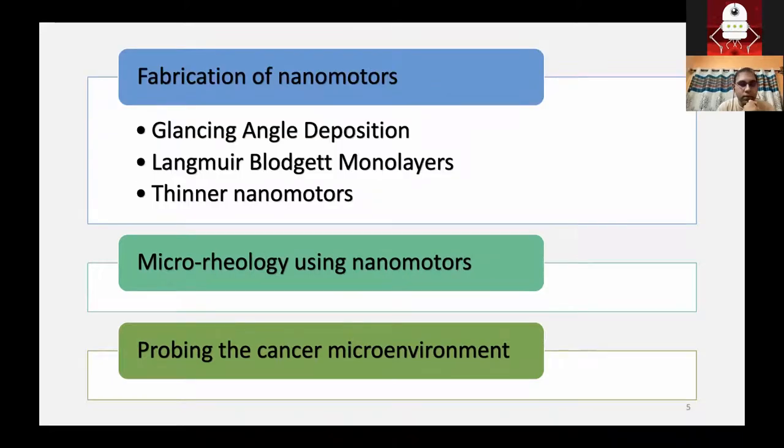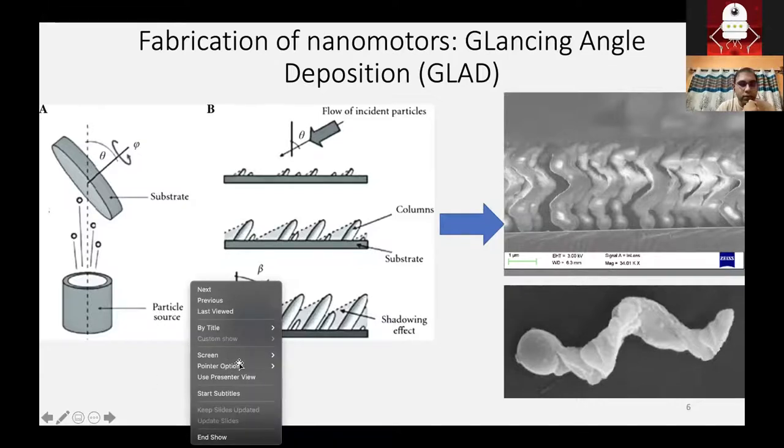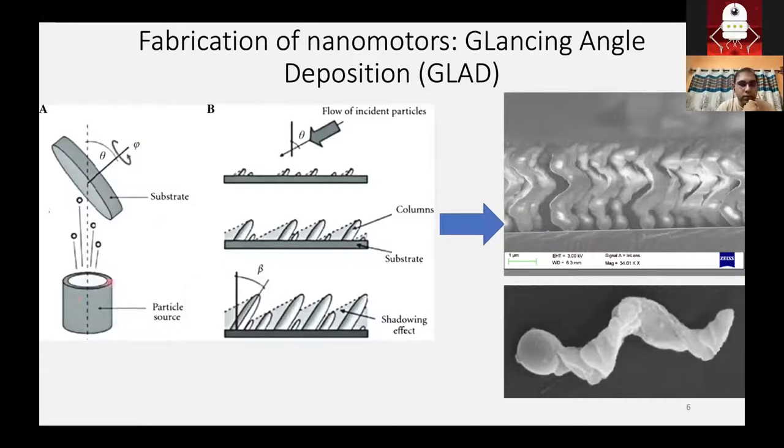In our lab, we fabricate nanomotors using glancing angle deposition. We use something called Langmuir Blodgett monolayers, and I'll be talking about how we create thinner nanomotors and why do we need them. Most of the audience over here knows about glancing angle deposition. It's a shadow vapor deposition technique where you have a particle source that is heated up and it evaporates and creates some particle that goes and sits on the substrate. Without any seed layer, it will create random unseeded growth. But if you have seed layer, which in our case is mostly polystyrene beads, you can create such helices with figuring out the rotation, the rate of rotation. And that is how we create nanomotors in our lab.